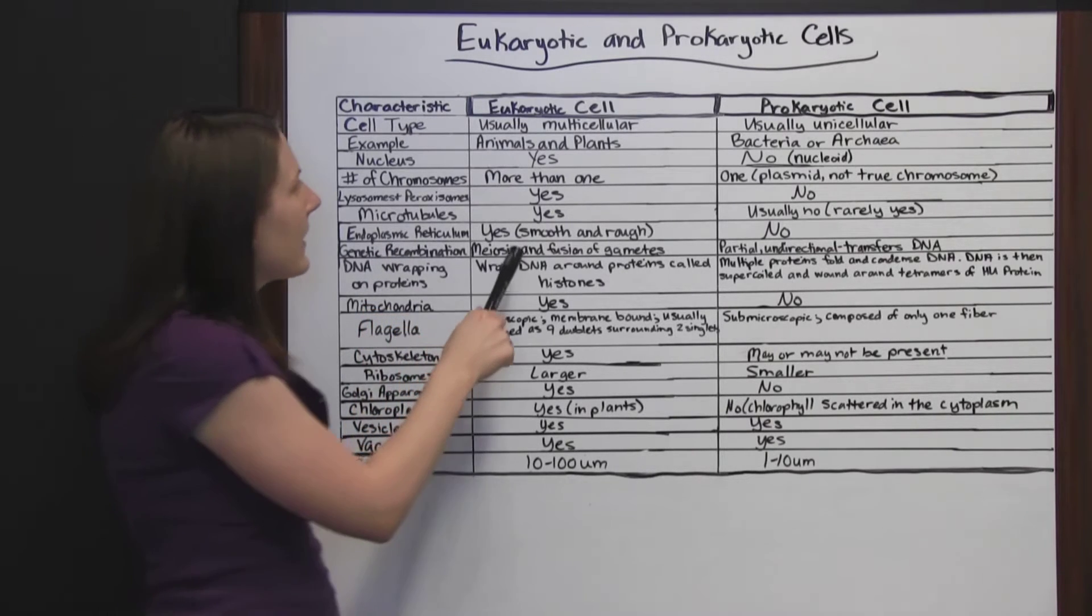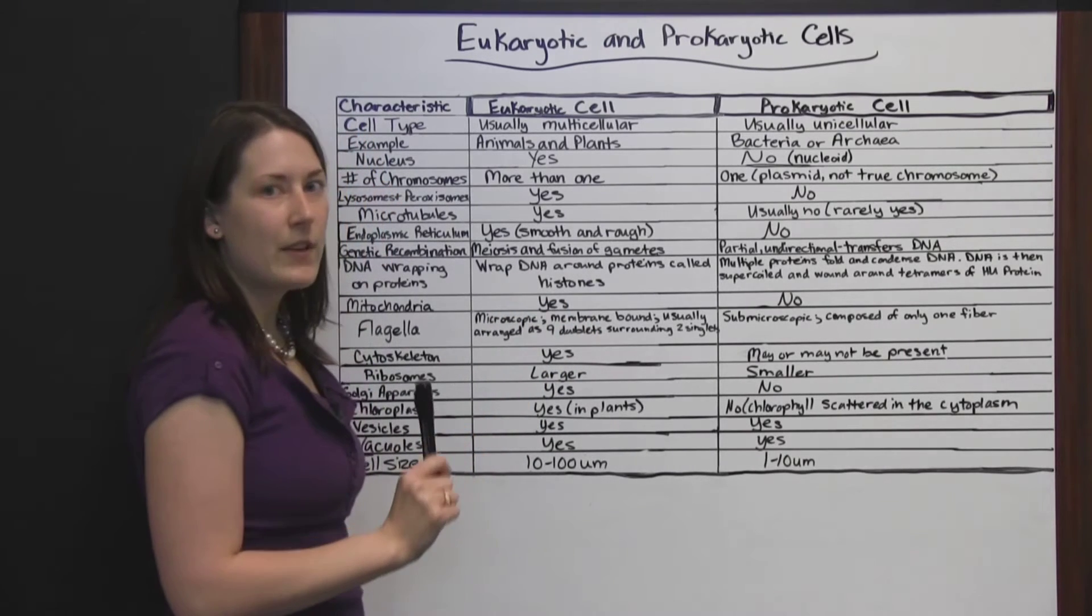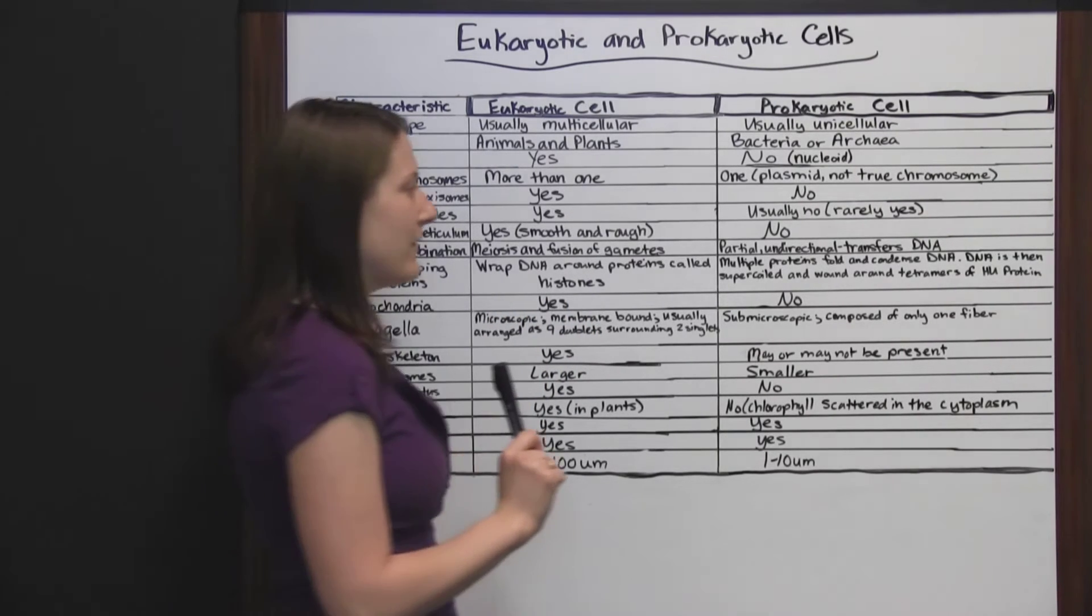Endoplasmic reticulum. The eukaryotic cell has one, and it's got parts that are both smooth and rough endoplasmic reticulum, each part functioning a little bit differently.